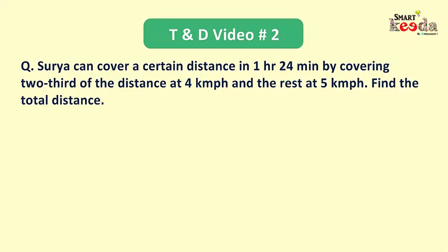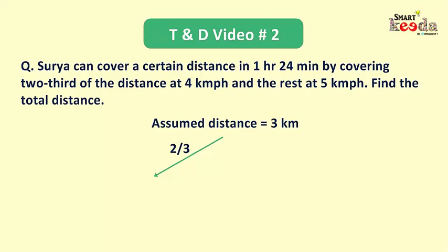We can start solving this question by assuming the distance to be 3 km. If the assumed distance is 3 km, the first journey, which is 2/3 of the complete journey, will be 2 km. This journey is covered at a speed of 4 km per hour, therefore the time taken will be distance upon speed, equal to 1/2 hour or 30 minutes.